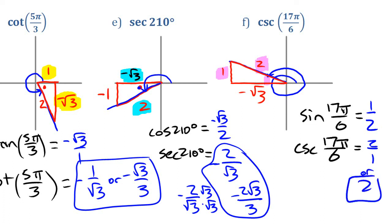So that's a look at how you can find trig ratios for special angles related to π/6, π/4, and π/3, without even touching your calculator — as long as you know those two special triangles.